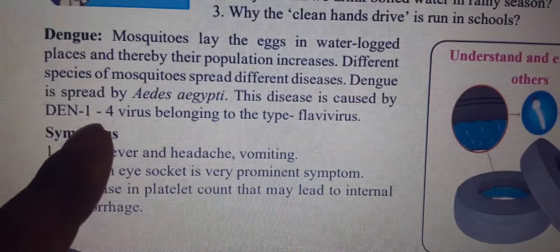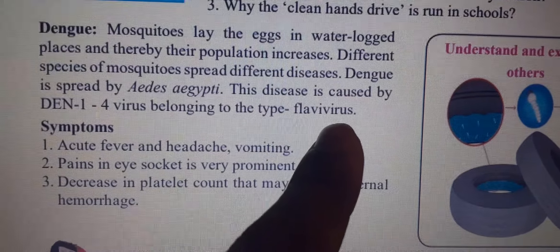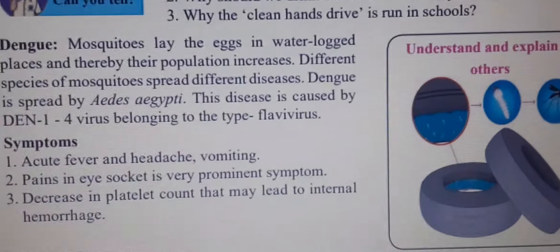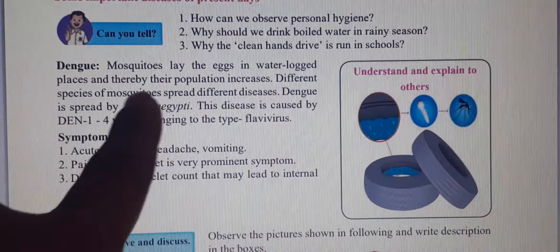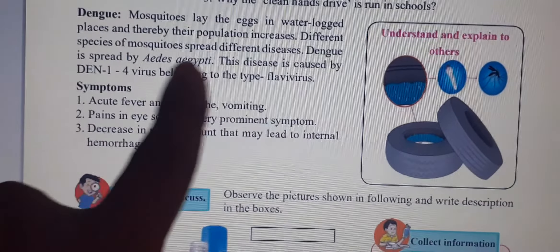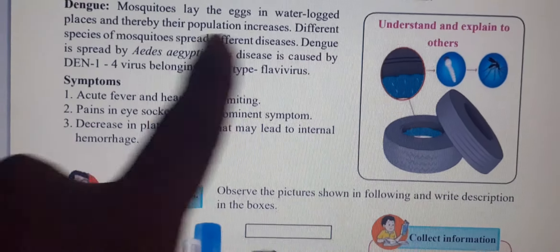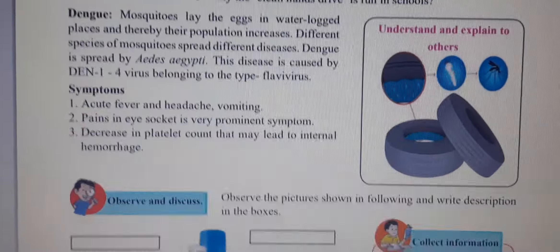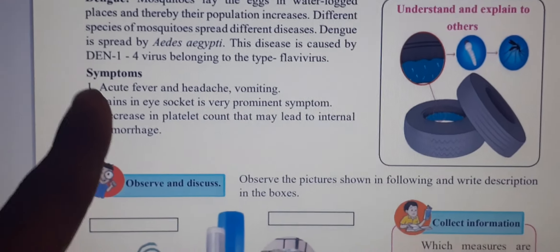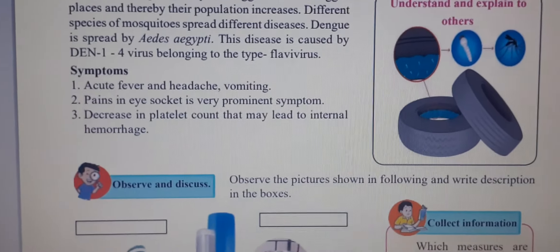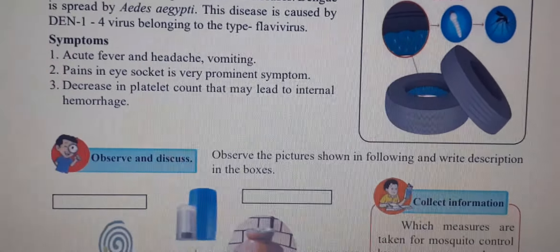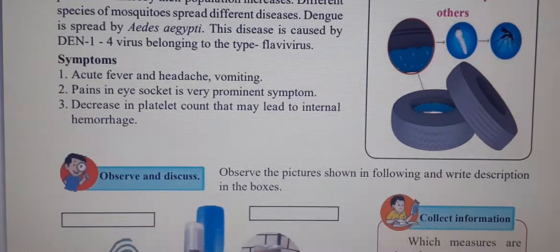This disease is caused by the DEN I–IV virus, belonging to type flavivirus. Symptoms include acute fever and headache, vomiting, pain in the eye socket which is a very prominent symptom, and body ache. There is also a decrease in platelet count that may lead to internal hemorrhage.